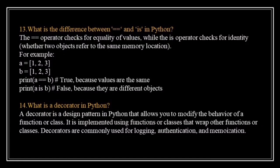What is the difference between the equality operator (==) and the is operator in Python? The equality operator compares the values of two objects — it checks whether the content of the objects is the same. If the values are equal, it returns True; otherwise, it returns False. The is operator checks whether two objects refer to the same memory location. It does not compare values; instead, it compares identity. For example, given two lists a and b, print(a == b) returns True because the values are the same. But print(a is b) returns False because they are different objects.